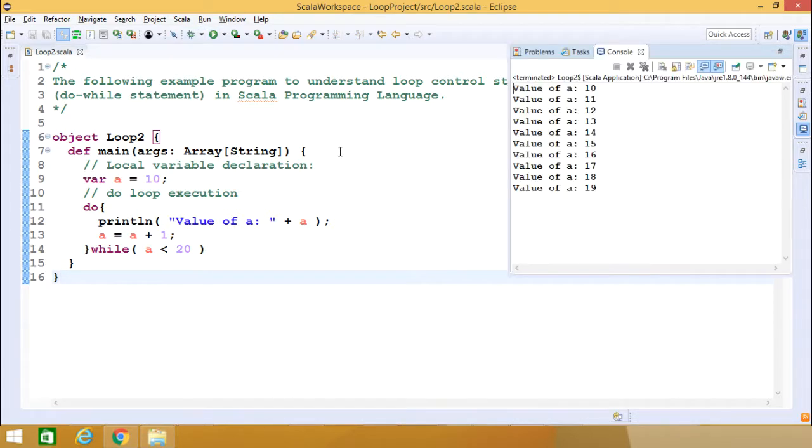Let me go for the execution for better understanding. Here you see the value of a is equal to 10, then the value of a is equal to 11, value of a is equal to 12. In this way we are getting values up to 19 and then it is exiting from the loop.